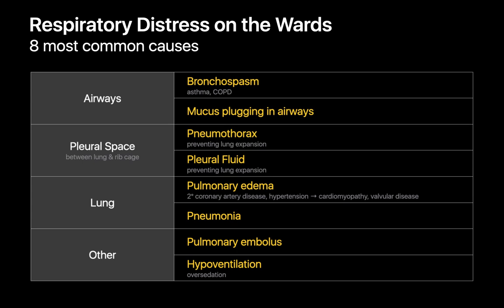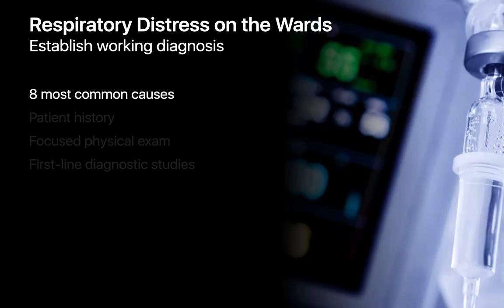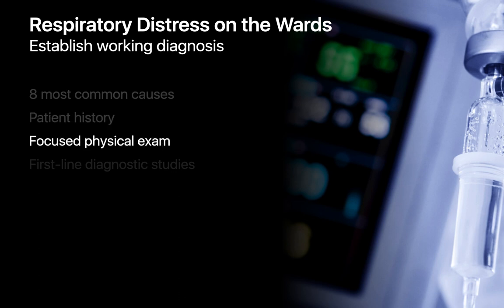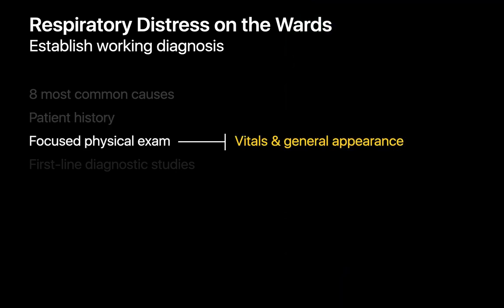This list is the primary differential diagnosis for inpatient respiratory distress, and it's the entire team's job — whether on the wards or in the radiology reading room — to figure out which item might be the culprit. Establishing a working diagnosis requires a review of the patient's recent medical history and a focused physical exam, beginning with an assessment of vitals and general appearance.